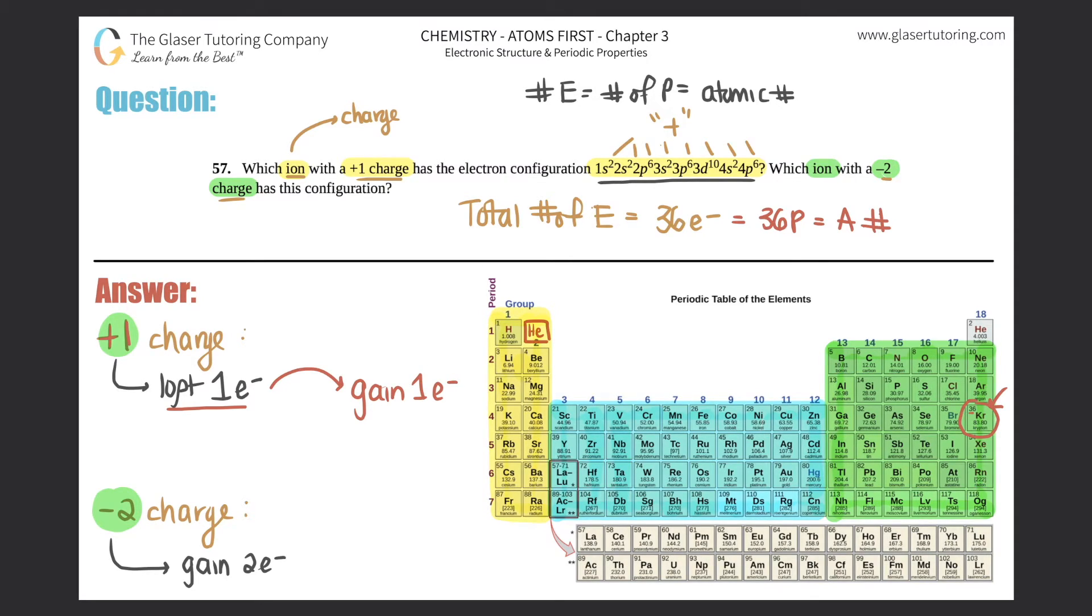If I go from 36 to 37, it was rubidium (Rb). This ion was really Rb with a plus one. It was rubidium, but when it lost that one electron, it wasn't 37 anymore—it was 36.